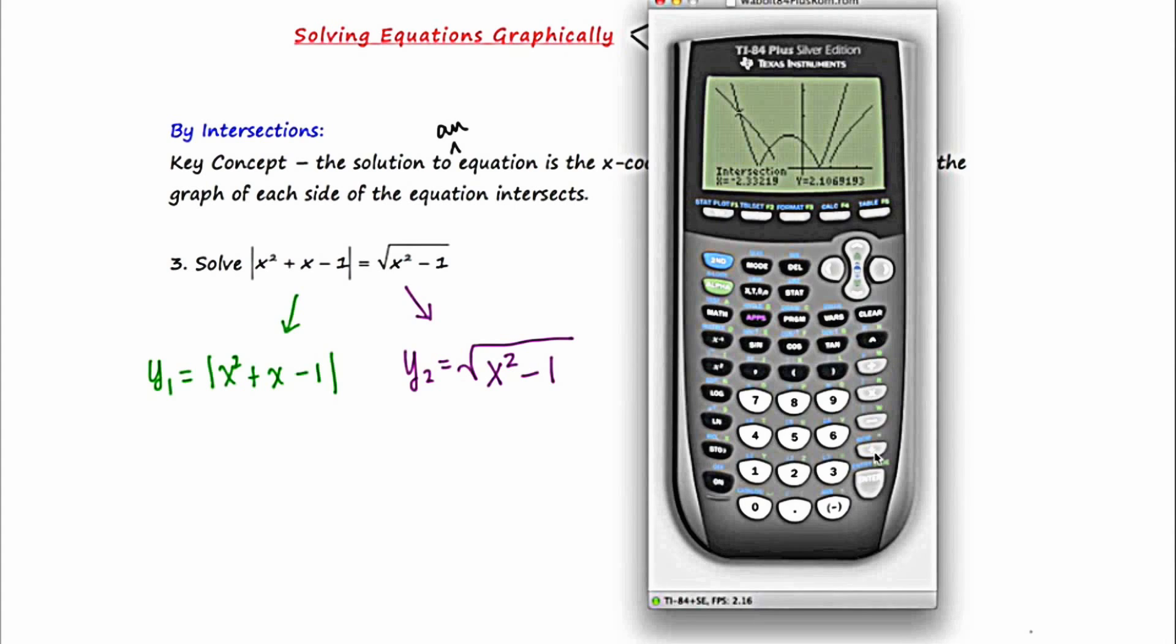And that's okay, not every answer in math is a whole number. But for our class, we're going to be rounding to the nearest hundredth. So in case number one, x is equal to negative 2.33.